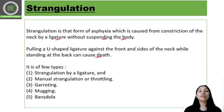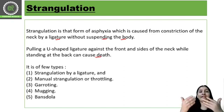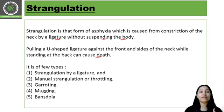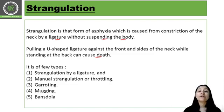If someone manually strangulates someone, the whole finger arrangement comes behind the neck and the thumbs are present on the front side of the neck, so the pressure is applied with the help of the thumbs. This creates different types of marks over the neck and comes under manual strangulation.